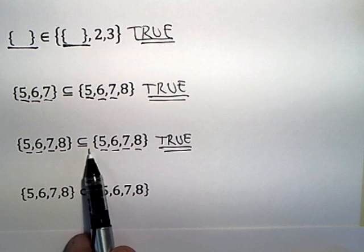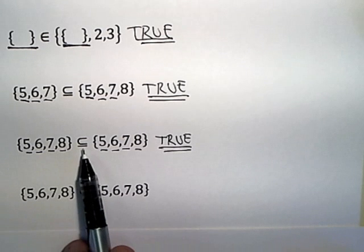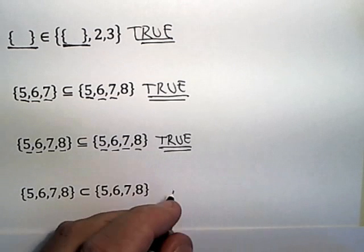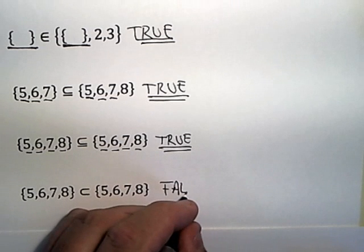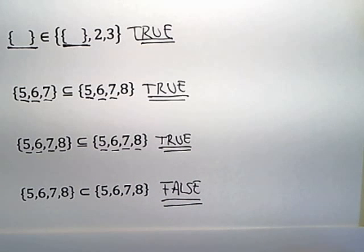Now, the difference between regular subset, which has the horizontal line underline, and the proper subset, which doesn't, is that the proper subset does not allow equality. If I just had the proper subset here, which is what I did here, that changes this statement from true to false, because now a proper subset does not allow the possibility of equality.